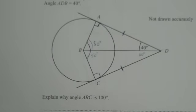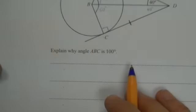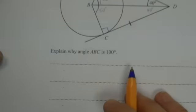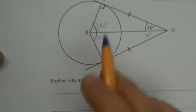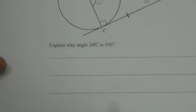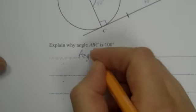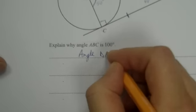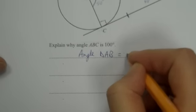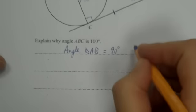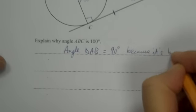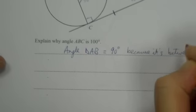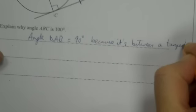Okay, so I need to say, why does angle ABC make 100 degrees? I'm going to look at my first reasoning, okay, with 50 degrees there. And I'm going to say angle DAB equals 90 degrees, because it's between a tangent and radius.